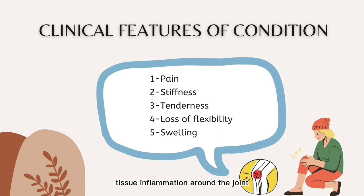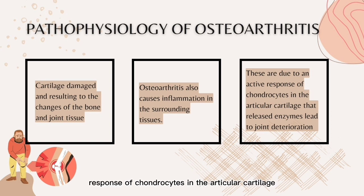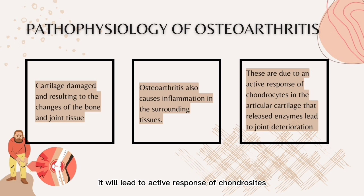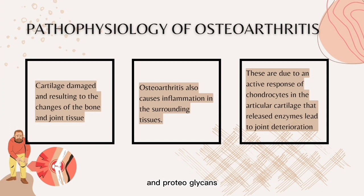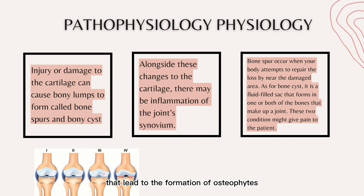This swelling might be caused by soft tissue inflammation around the joint. The pathogenesis of osteoarthritis involves a degradation of cartilage and remodeling of bone due to an active response of chondrocytes in the articular cartilage and inflammatory cells in the surrounding tissues. Chondrocytes are a group of cells in the articular cartilage. When there is injury or damage to the cartilage, it leads to an active response of chondrocytes, releasing enzymes that break down the proteins collagen and proteoglycans, destroying the articular cartilage. The exposure of the underlying subchondral bone results in sclerosis, followed by reactive remodeling changes that lead to the formation of osteophytes or bone spurs and subchondral bone cysts.